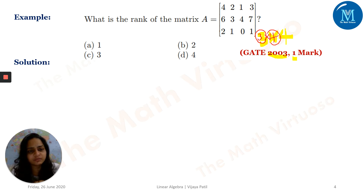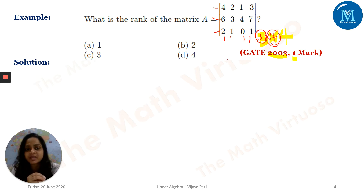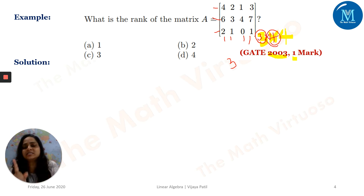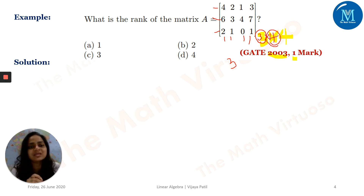A 4×4 determinant is not possible here because I only have three rows. So the highest order determinant is 3×3, meaning the maximum possible rank is three. My approach is: first decide the highest order determinant possible. Here it is three, not four, because we have a 3×4 matrix with no fourth row. So maximum possible rank is three.